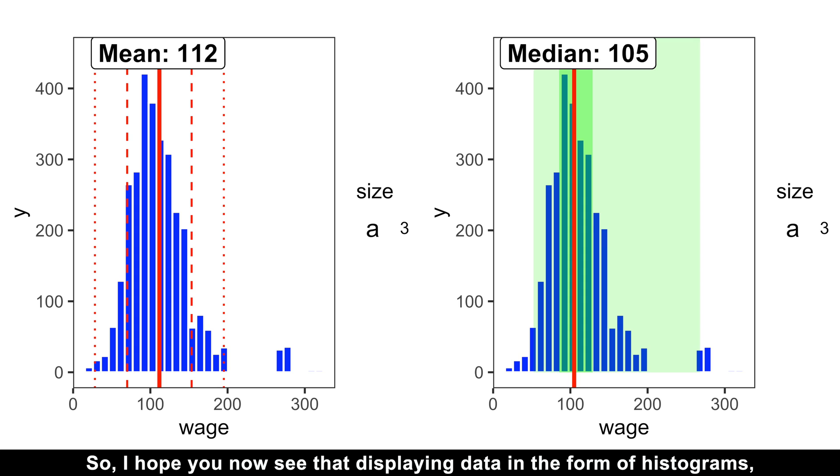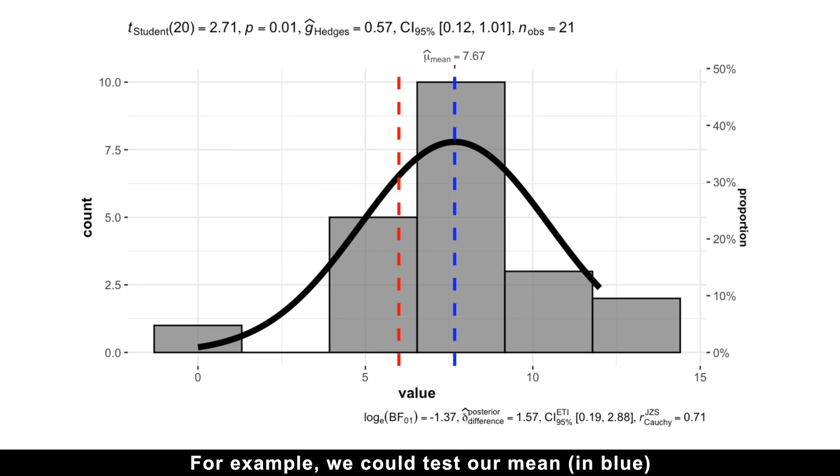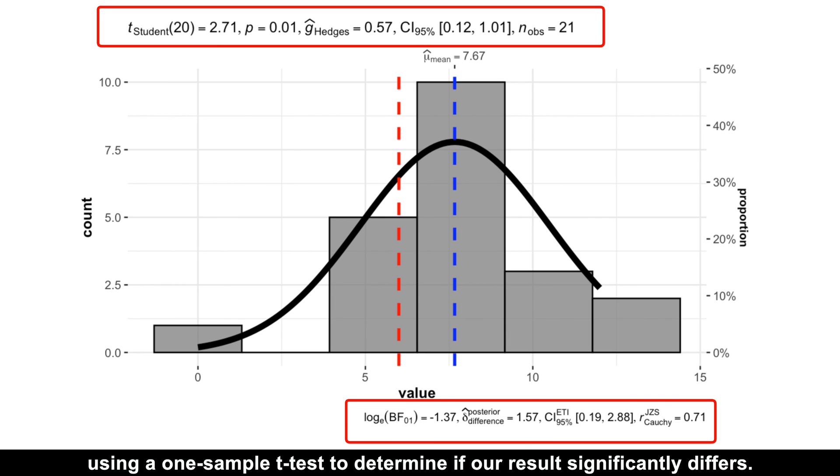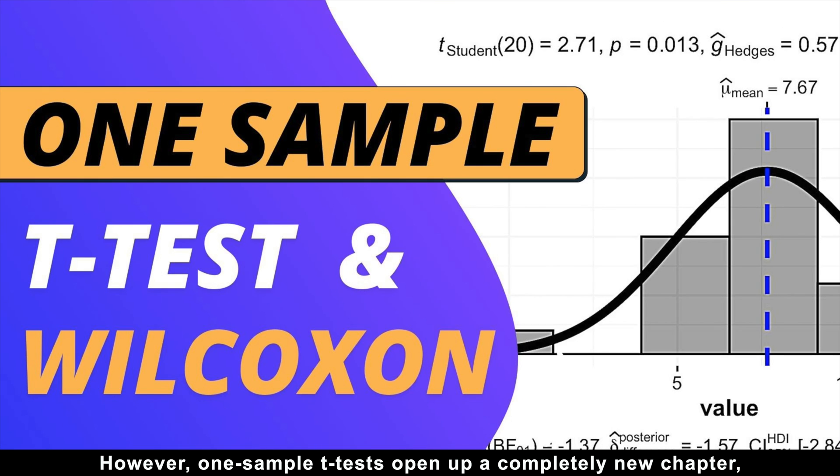I hope you now see that displaying data in the form of histograms, density curves, and central tendencies is a useful tool for making decisions. For example, we can test our mean in blue against the mean of other people in red using a one-sample t-test to determine if our result significantly differs. However, one-sample t-tests open a completely new chapter and you can explore all the intricacies right here in this video.